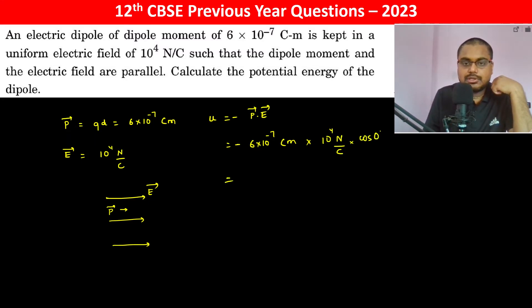So coulomb coulomb has gone, so this becomes minus 6 into 10 to the power minus 3 Newton meter. That is minus 6 into 10 to the power minus 3 Joule. So this is the potential energy.